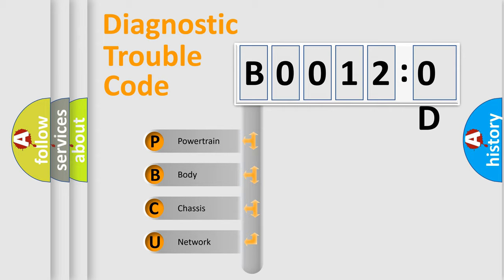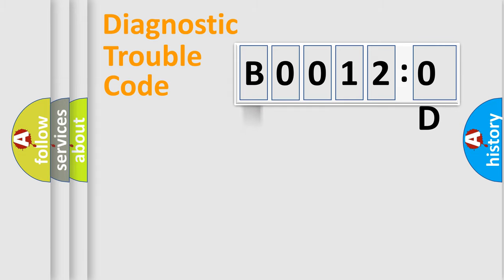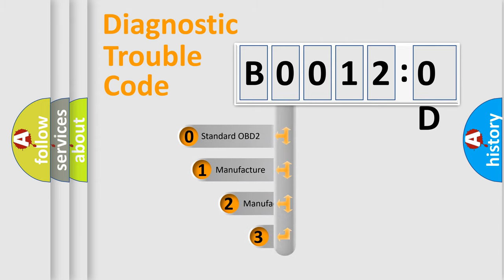We divide the electric system of automobile into four basic units: Powertrain, Body, Chassis, and Network. This distribution is defined in the first character code.